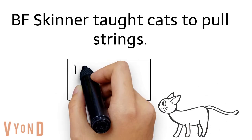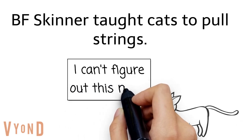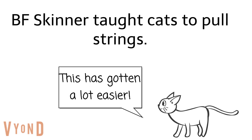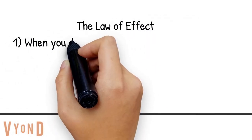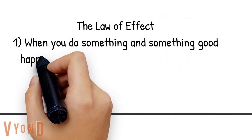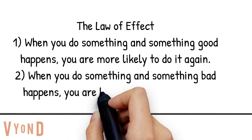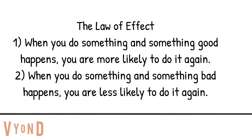Operant conditioning started with B.F. Skinner. What he did was he put cats in a maze and had them pull a string in order to get out of the maze. Skinner realized that the more times the cat was placed in the maze, the quicker the cat would find its way out. Based on his work, Skinner came to the conclusion that if you do something and something good or positive happens, you're more likely to do that thing again, whereas if you do something and something negative happens, you're going to be less likely to do that thing again.